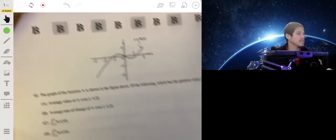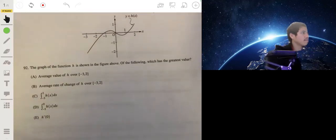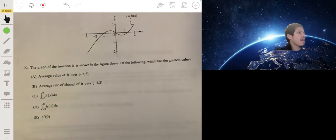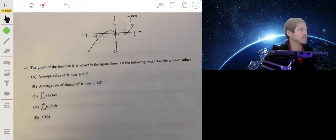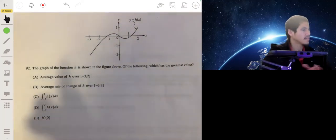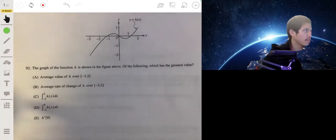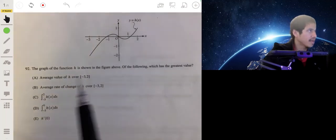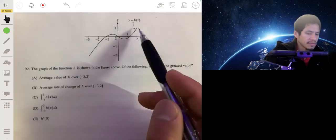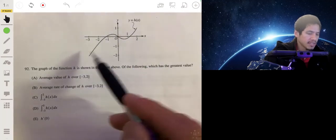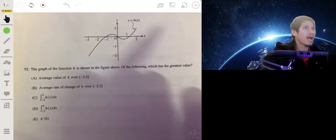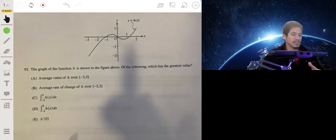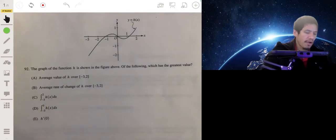The last one in this multiple choice section: we have the graph of H shown here, and which one has the greatest value? This one is going to be another conceptual, really thinking, reasoning one, because you can't actually compute an equation and compare actual numbers. You have to kind of get an idea of how the values would relate to each other.